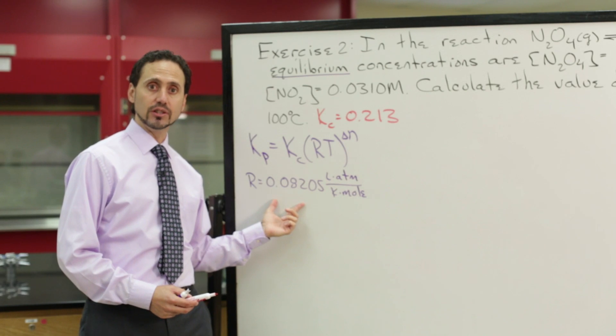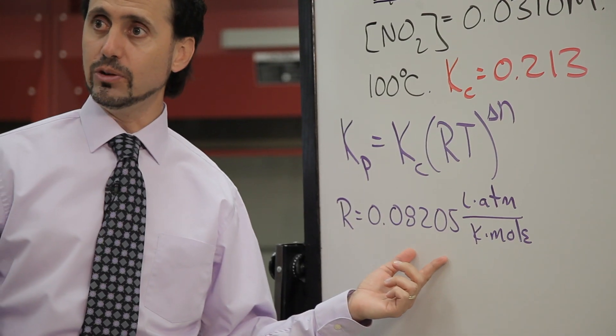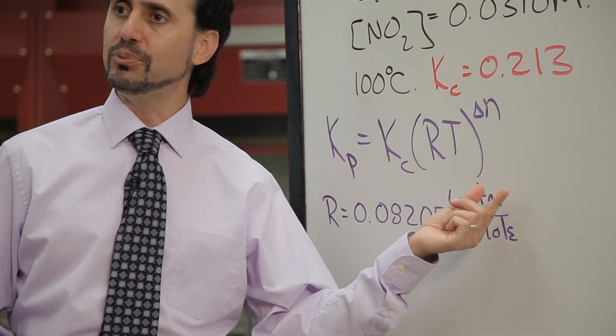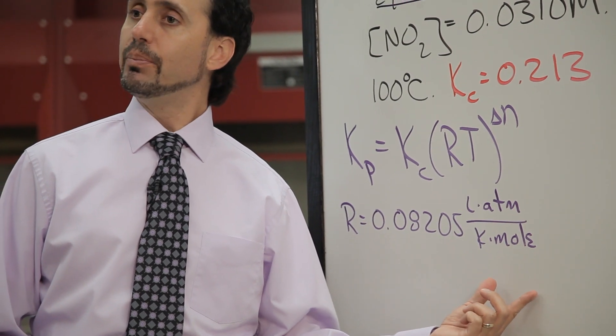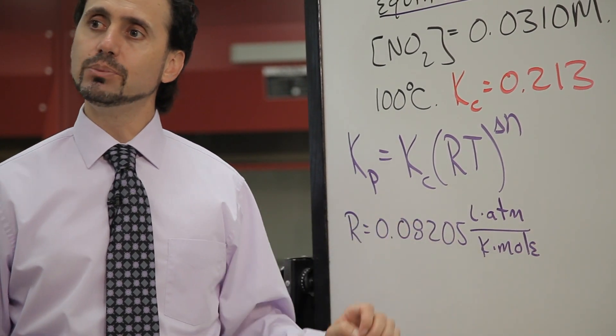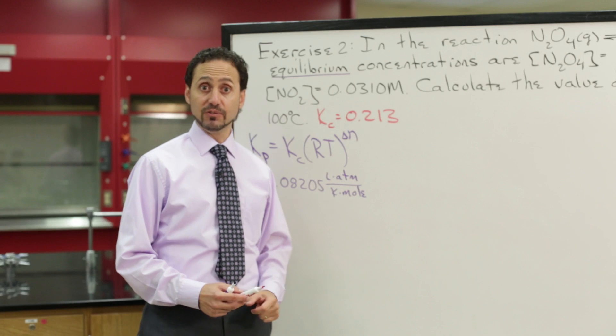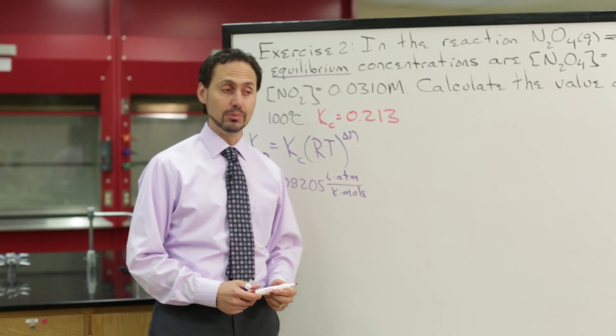R is our universal gas constant, 0.08205, with units of liters times atmosphere over Kelvin mole, but again, because we're working with equilibrium constants, we're going to be neglectful of units for this one problem.